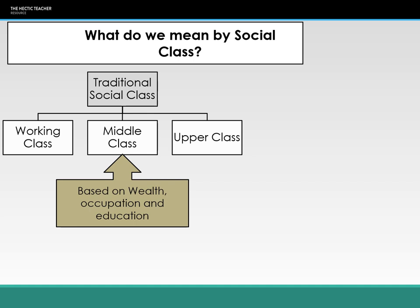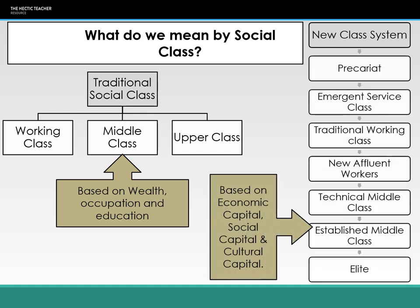This kind of system means that not everyone's really sure where they fit. So in 2007, the British Social Attitude Survey came up with a new system of classes, and this system had seven different classes: the Precariat, Emergent Service Class, Traditional Working Class, New Affluent Workers, Technical Middle Class, Established Middle Class, and the Elite.